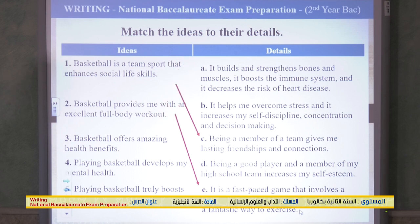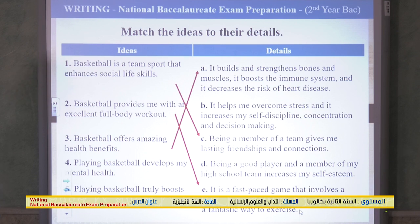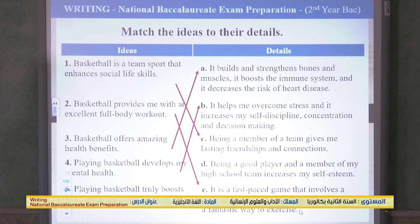Idea three: 'Basketball offers amazing health benefits' — this goes with A: it builds and strengthens bones and muscles, boosts the immune system, and decreases the risk of heart disease. Idea four: 'Playing basketball develops my mental health' — this goes with B: it helps me overcome stress and increases my self-discipline, concentration, and decision-making. Idea five: 'Playing basketball truly boosts my overall confidence' — this goes with D: being a good player and member of my high school team increases my self-esteem.